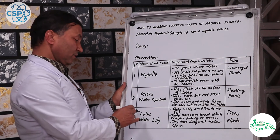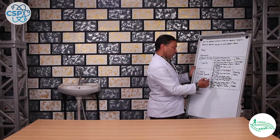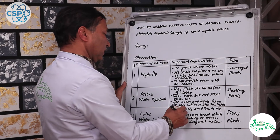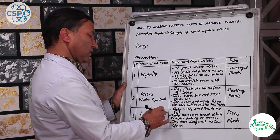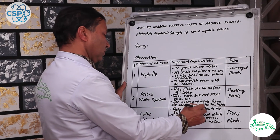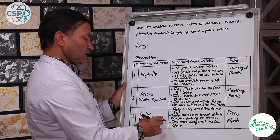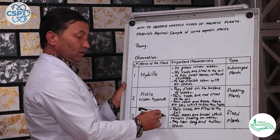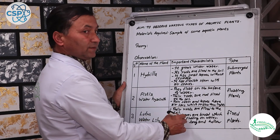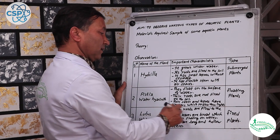Lotus and Water Lily — first character: their roots are fixed on the water bed. Last character: they have long and hollow stems in the plant.